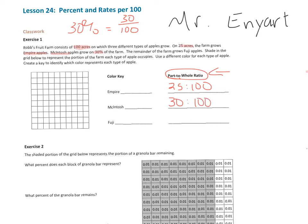And again, the 100 represents acres. The 30 represents how much of the 100 is McIntosh apples.